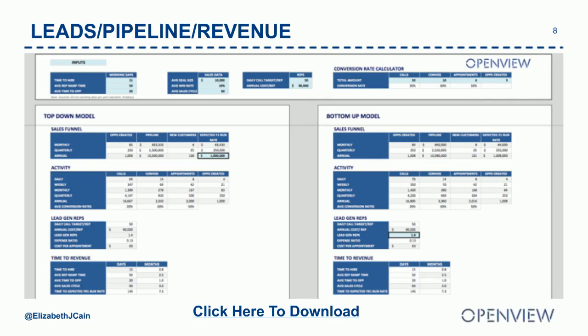The opposite is also true. If you have a team already in seat and someone asks how you predict what you'll do this quarter, you start with the same assumptions around activity levels and conversions, tell us how many BDRs you have, and we help you predict the pipeline and revenue you could expect to influence. This is a really interesting way to quantify the impact of that team and get to a harder number on how many you should be hiring.